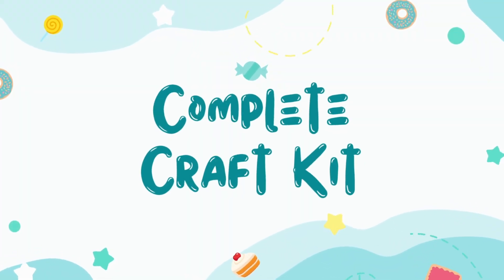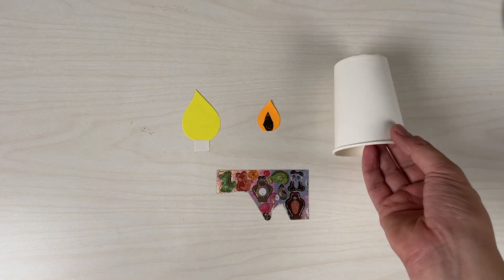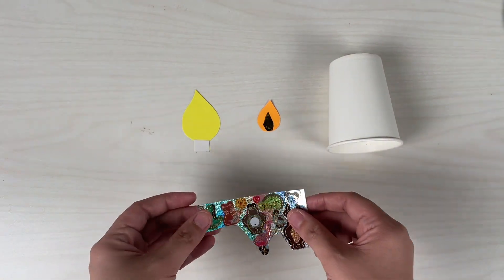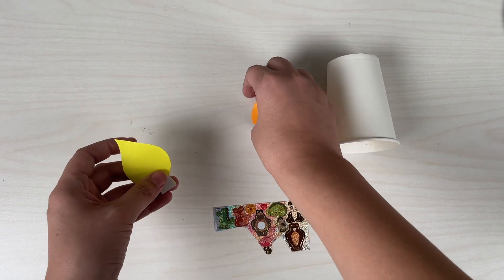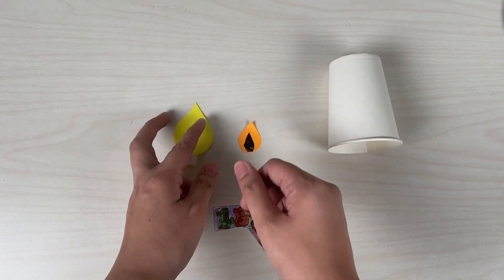So the complete craft kit should contain a paper cup, a section of stickers, the big yellow flame with double-sided tape on the flap, and the medium and small flame that are attached together.